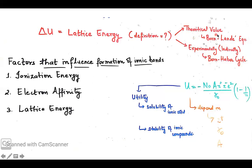You can theoretically calculate the lattice energy using the Born-Landé equation. This equation is: U = −N₀ · A · Z⁺Z⁻ · e² / R₀ × (1 − 1/N). Here, N₀ is the Avogadro constant because we are talking about the formation of one mole of an ionic compound. A is the Madelung constant, which accounts for the three-dimensional arrangement of ions in a crystal structure.